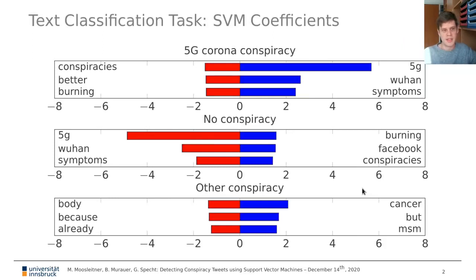We can see that especially for distinguishing the two classes — 5G corona conspiracy and no conspiracy — the term 5G and also Wuhan and symptoms are very distinctive. For the other class it is not easily detectable or intuitive what the weights of the single terms are to be interpreted.